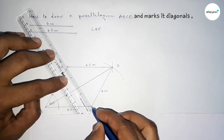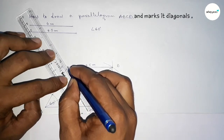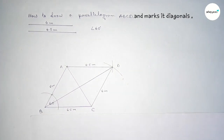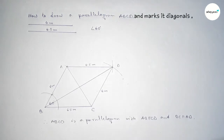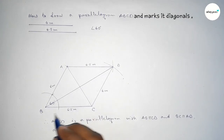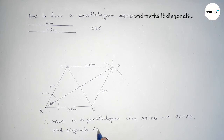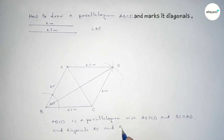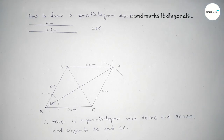AC is also a diagonal of this parallelogram. Therefore, ABCD is a parallelogram with AB parallel to CD and BC parallel to AD. The two diagonals are AC and BD. That's all — thanks for watching!